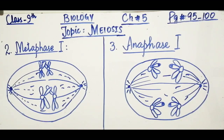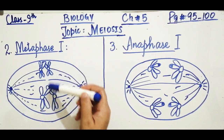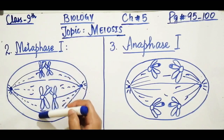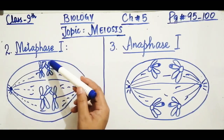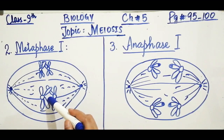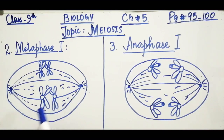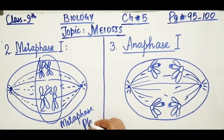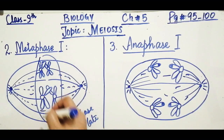In Metaphase I of Meiosis I, the pairs of homologous chromosomes align themselves along the equatorial plate, which is the central position of the cell. They arrange themselves at this central position, forming what is called the metaphase plate.